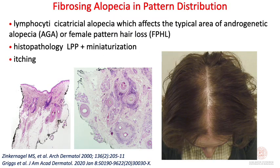There is a variant of FFA called fibrosing alopecia in pattern distribution, where there is a lymphocytic infiltrate not in the marginal area but in a diffuse pattern in the androgenetic alopecia area. Histopathology is important to confirm this variant, as it is a rare and difficult diagnosis. The typical lichenoid infiltrate is associated with miniaturization.